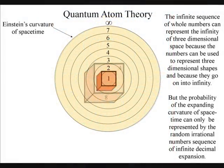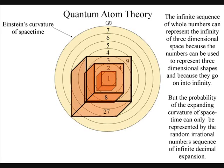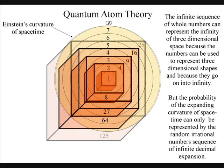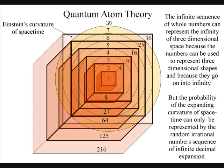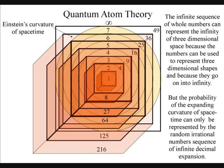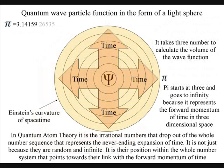It is easy to see how our infinite sequence of whole numbers can represent the infinity of three-dimensional space, because the numbers can be used to represent three-dimensional shapes. But it is the irrational numbers that drop out of the whole number sequence that represent the never-ending expansion of time.